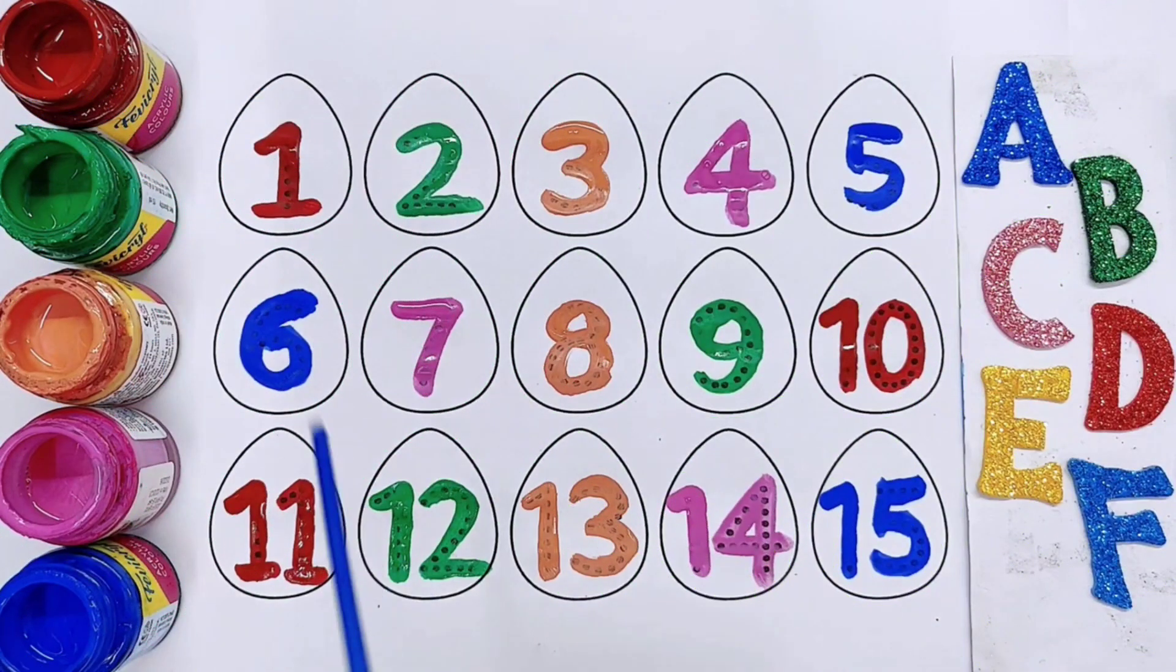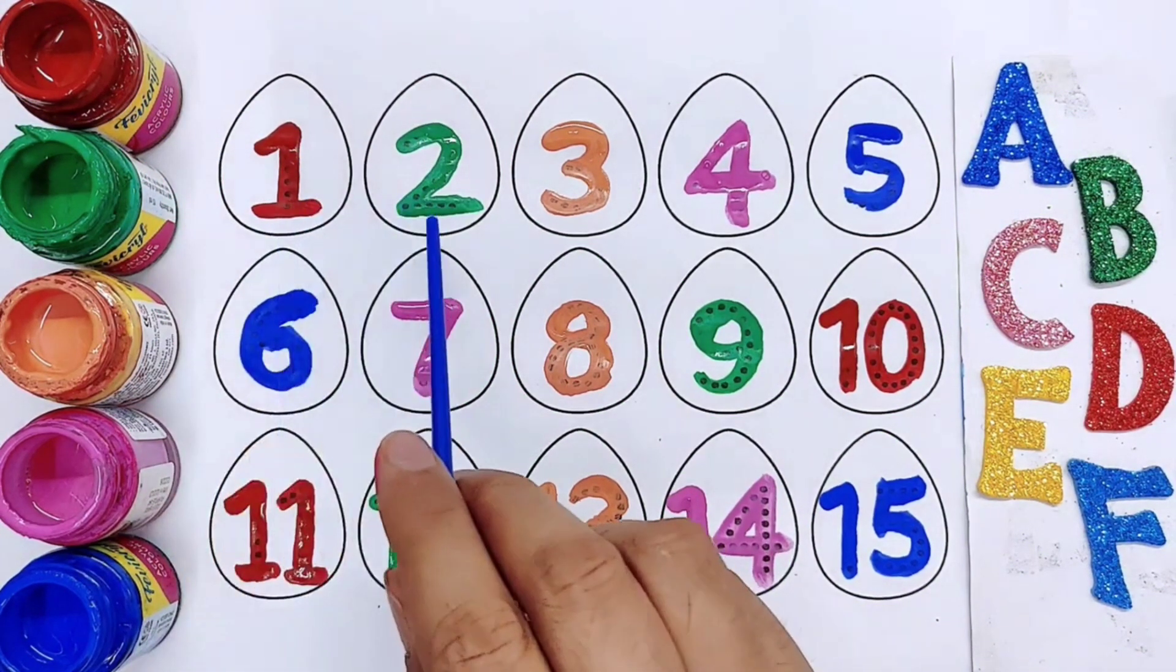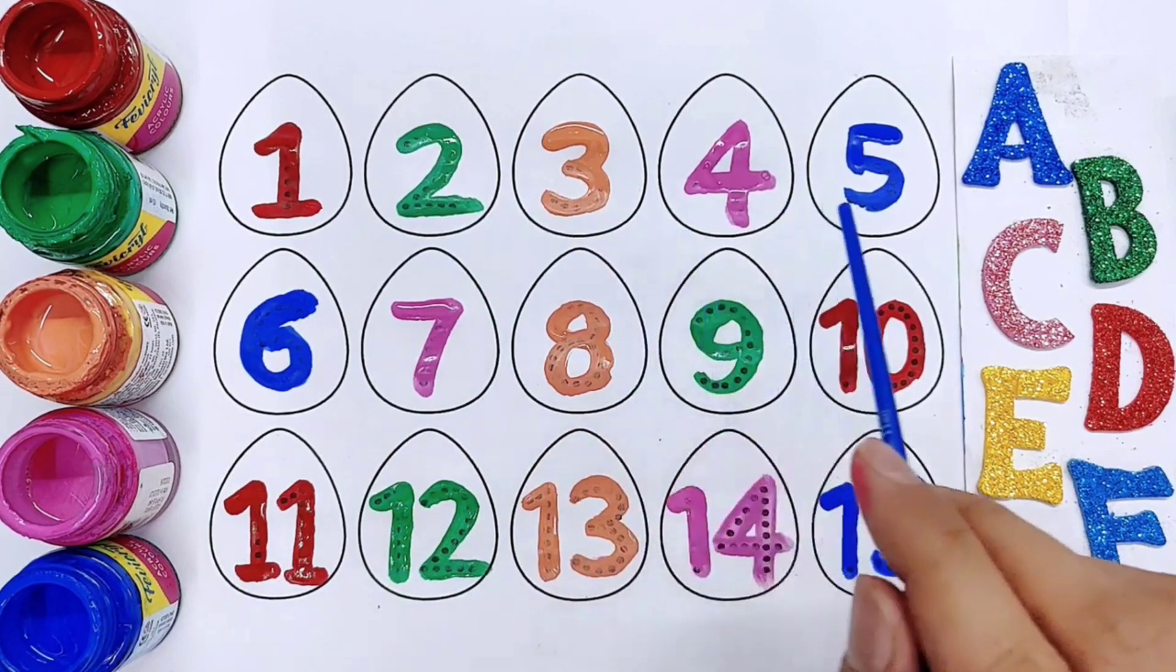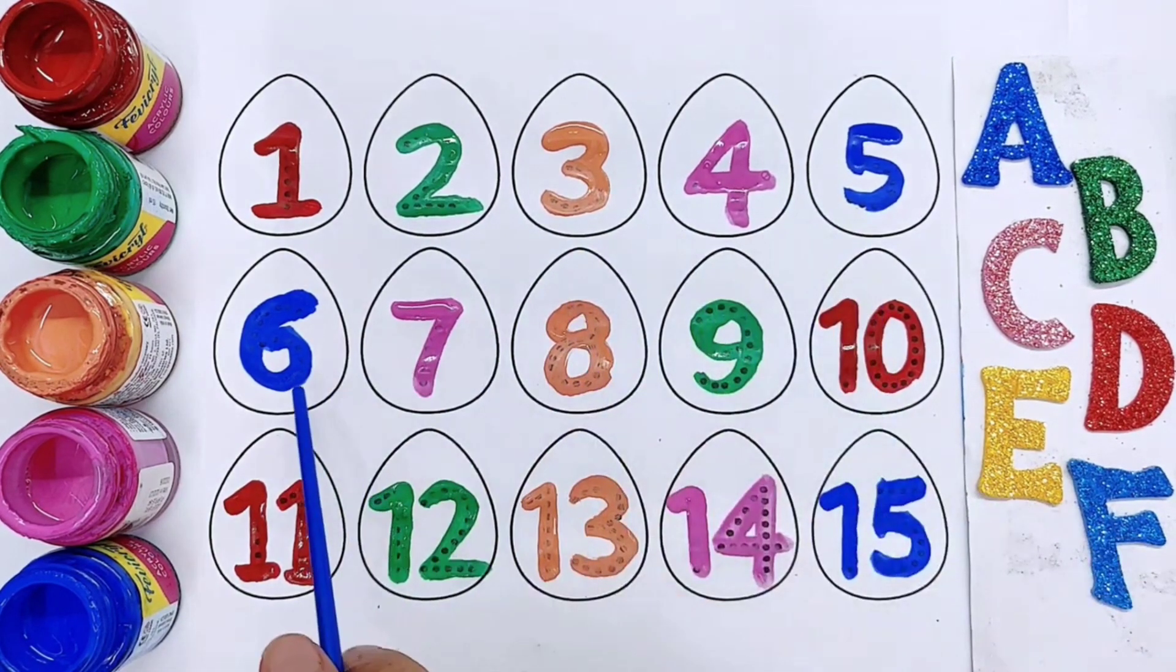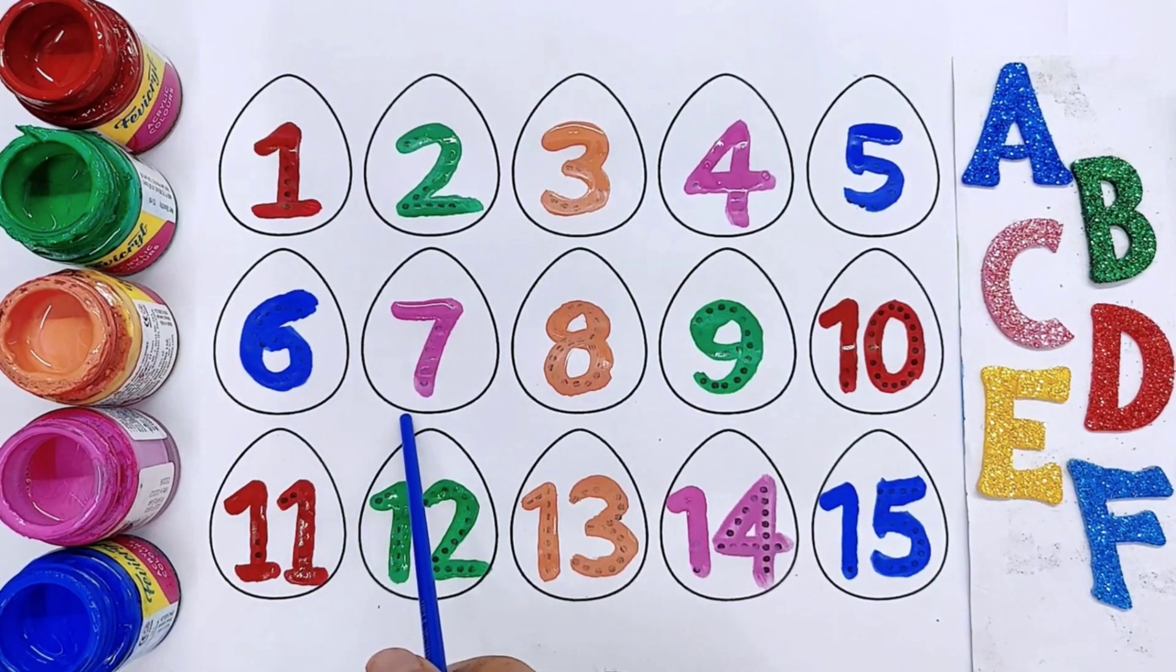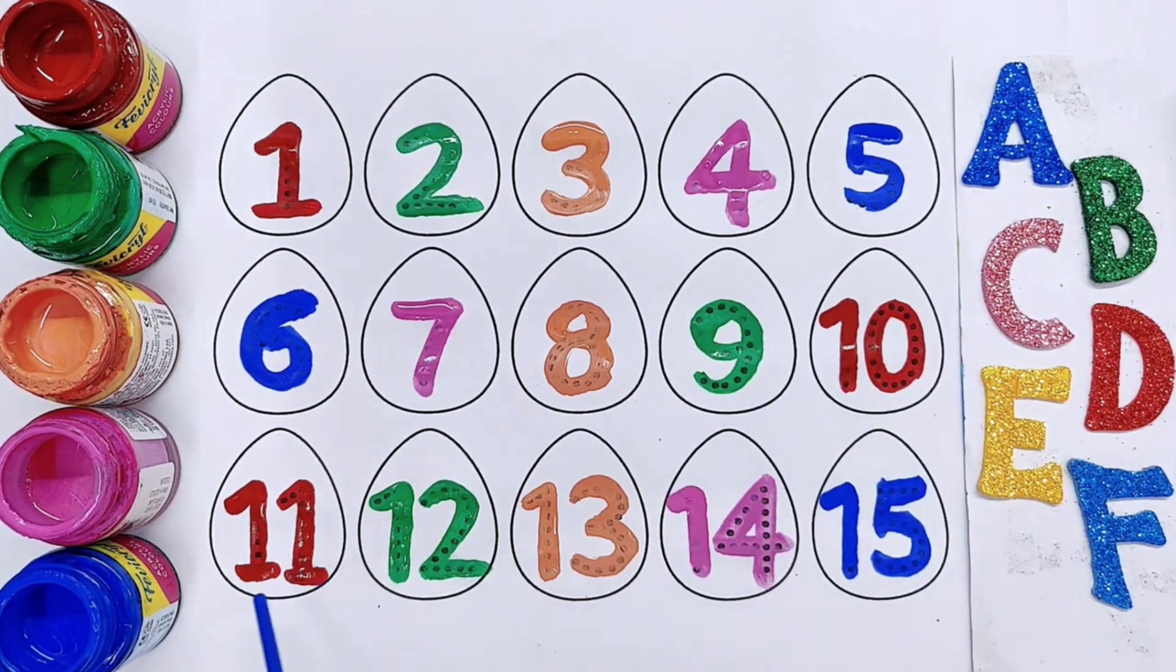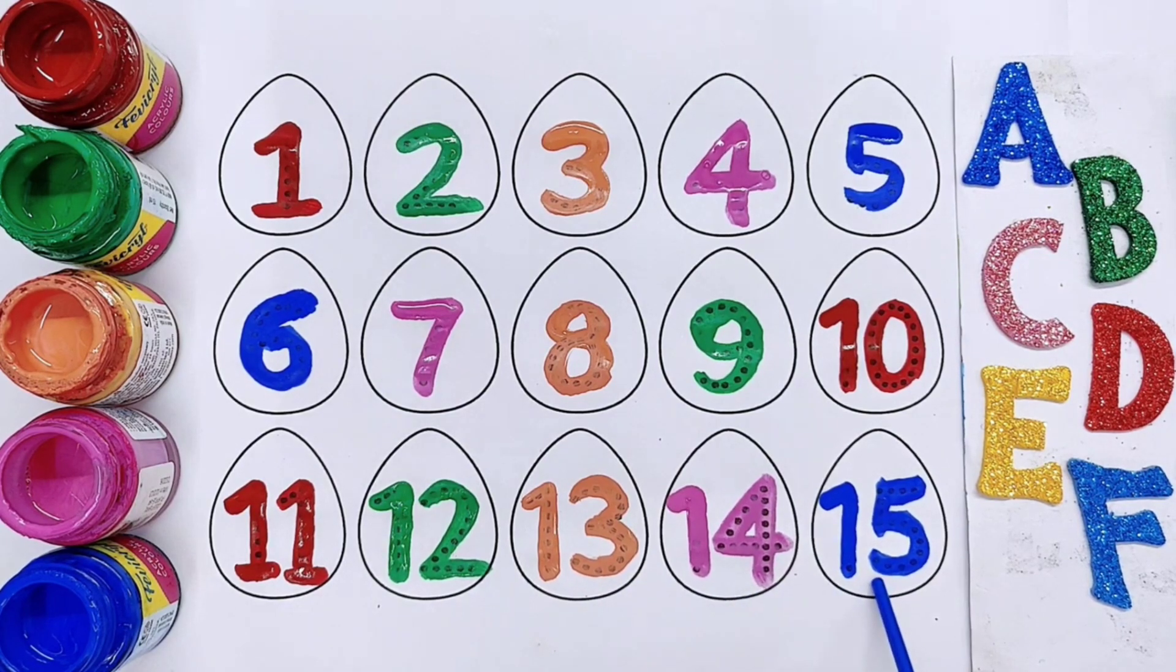Kids, one, two, three, four, five, six, seven, eight, nine, ten, eleven, twelve, thirteen, fourteen, fifteen.